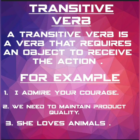A transitive verb needs an object to complete its action. For example: 'She loves animals.' Here, 'animals' is the object receiving the action of loving. The verb 'loves' is transitive because it acts upon the object 'animals.'